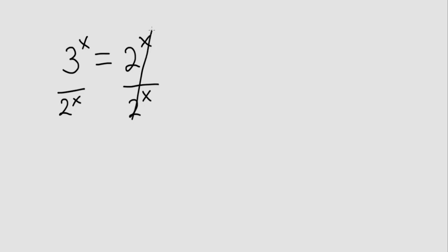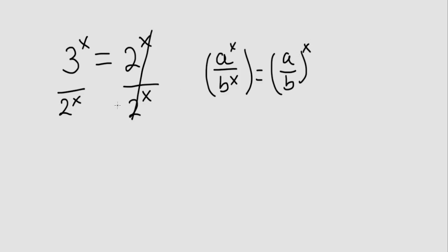This cancels out, and you have a to the x over b to the x, that is equal to a over b all to the x. So this side can be rewritten as 3 over 2 to the x, and this is equal to 1.